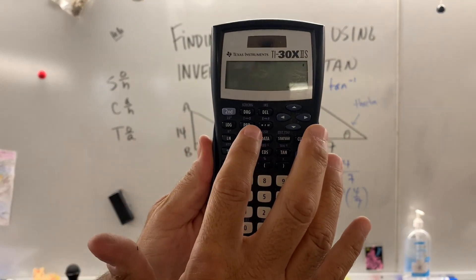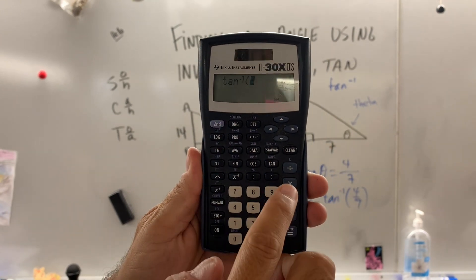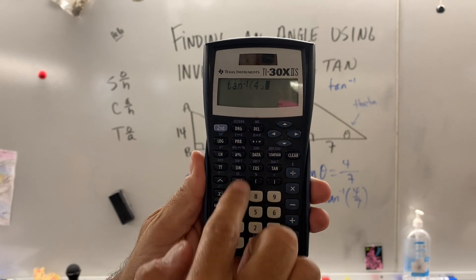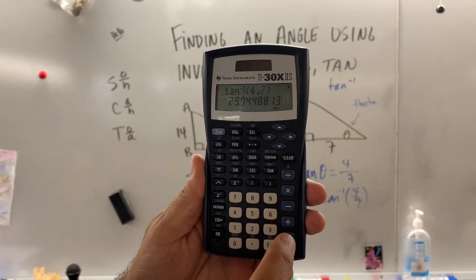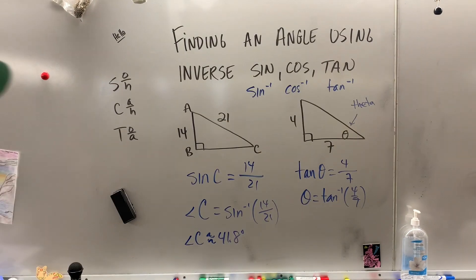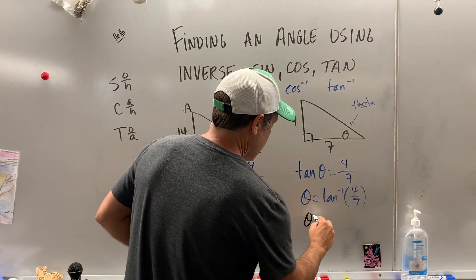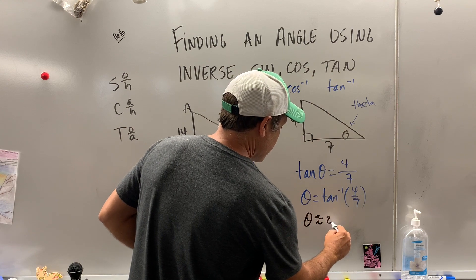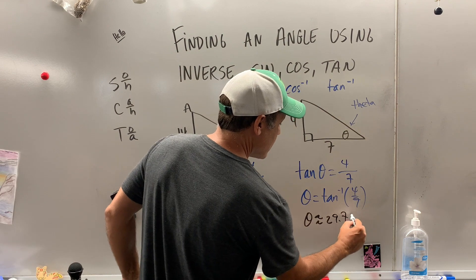Inverse tangent. So it's right here above the tangent in blue. So second, inverse tangent, 4, fancy button 7. I'm going to close the parenthesis and we get about 29.7 degrees. So theta is about 29.7 degrees.